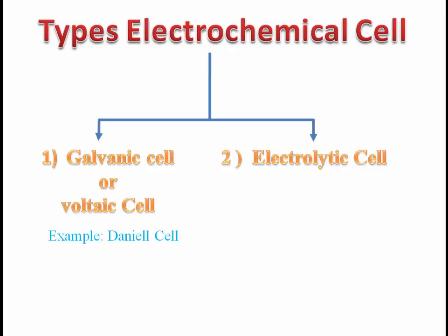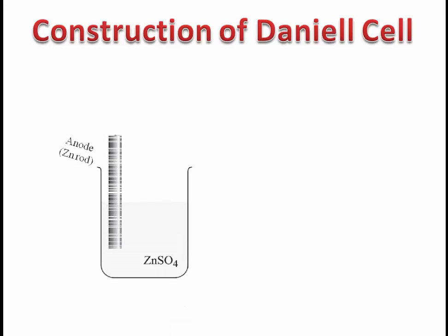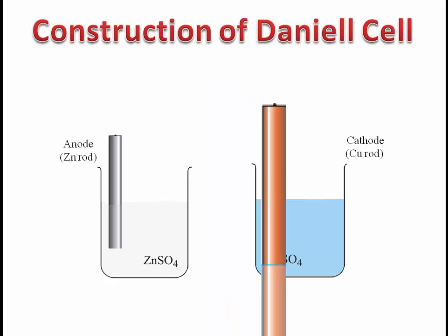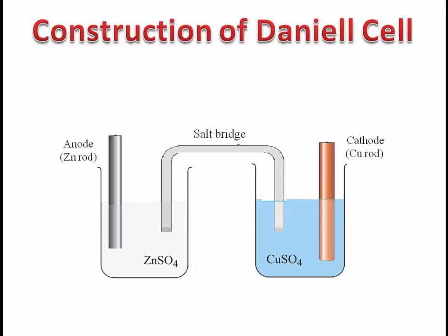In this video we discuss in detail about Daniel's cell. First, construction of Daniel's cell. Daniel's cell consists of a zinc rod immersed in zinc sulfate solution, and a copper rod dipped in copper sulfate solution. These two solutions are connected by a salt bridge. A salt bridge is a U-shaped glass tube consisting of a mixture of saturated KCl and agar-agar powder. These two compartments are connected externally through metallic wire.